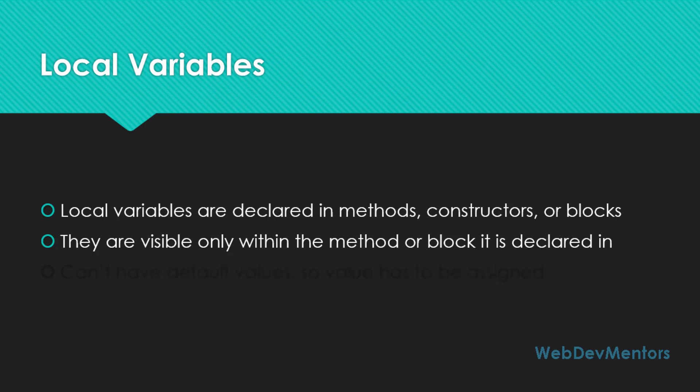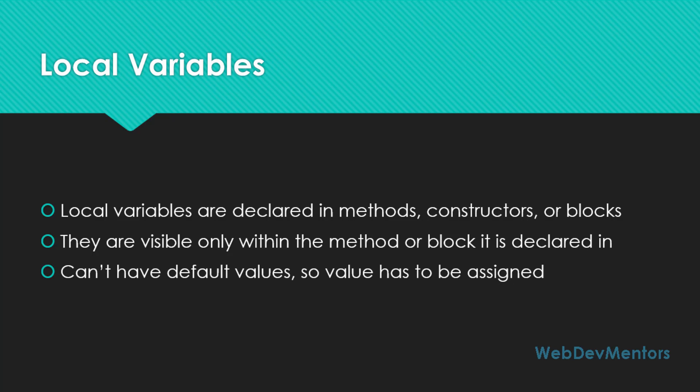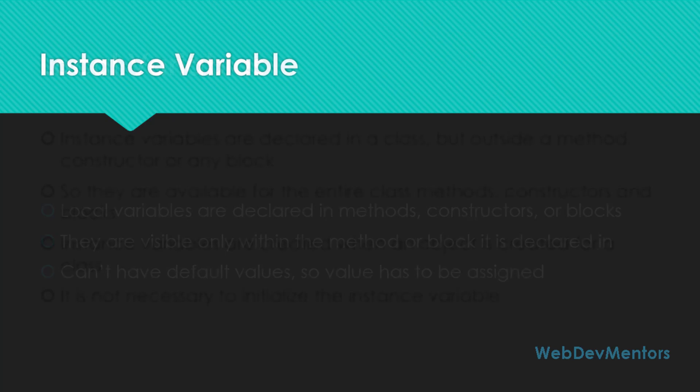A very important thing about local variables is that they cannot have default values — values must be assigned to the local variable. Even if it is a null value, you have to assign it before running the program. If you are creating a local variable within a method, you have to initialize it at the time of creating it, or at least before using it.